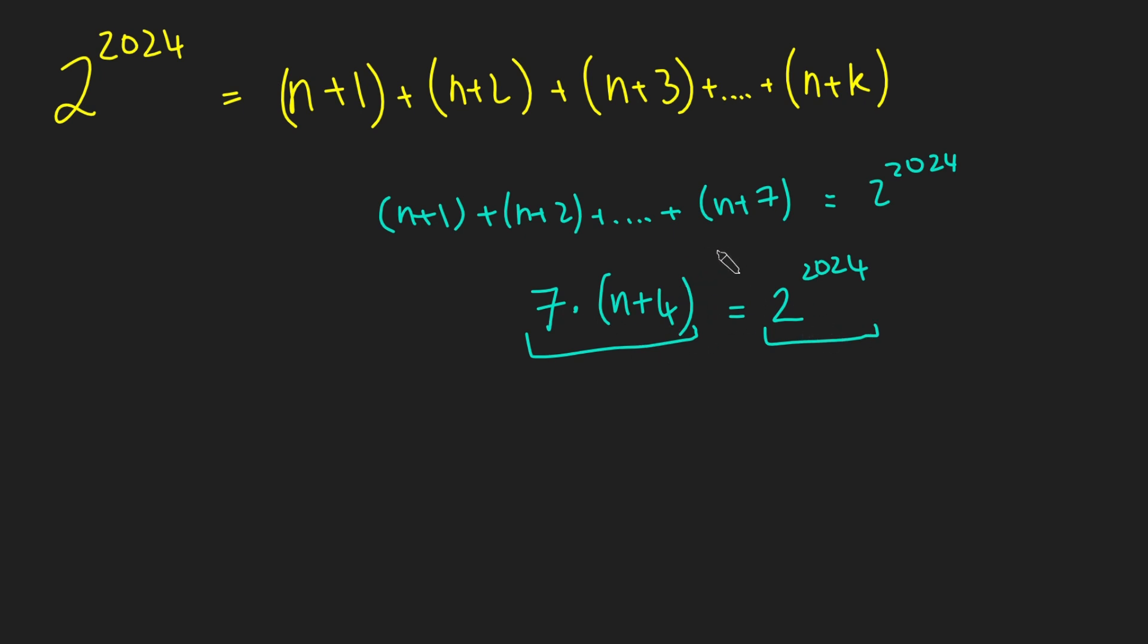And now, the exact same argument works if we replace 7 with any other odd number. If I tried to write 2 to the 2024 as the sum of, let's say, 13 numbers, that would mean that 2 to the 2024 is a multiple of 13, using a very similar argument.